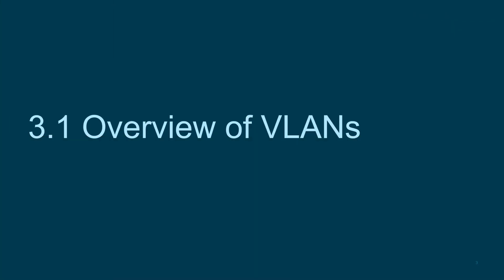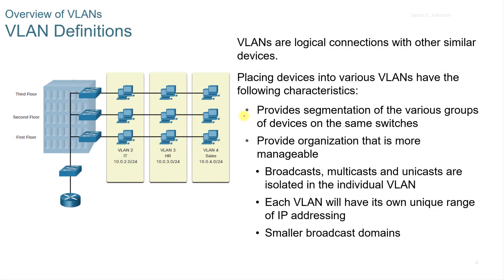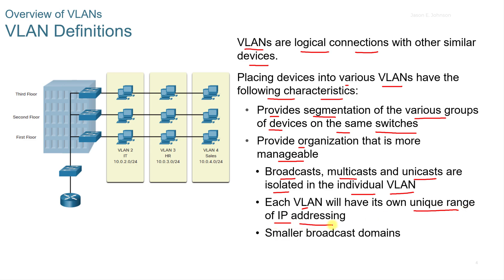3.1 Overview of VLANs. A VLAN consists of logical connections with other similar devices. By placing devices into various VLANs, we get the following characteristics: it provides segmentation of various groups of devices on the same switches, it provides an organization that is more manageable, and broadcast, multicast, and unicast traffic are isolated in the individual VLAN. Each VLAN will have its own unique range of IP addressing, and we can have smaller broadcast domains.